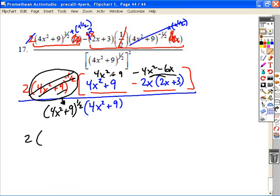Our final step is to simplify what we have. We have our two out front. The four X squared and the negative four X squared cancel, leaving negative six X and a positive nine. That's all over in the denominator, we have common base. We're multiplying exponents with the same base, you add their powers. So one-half plus one is three-halves.